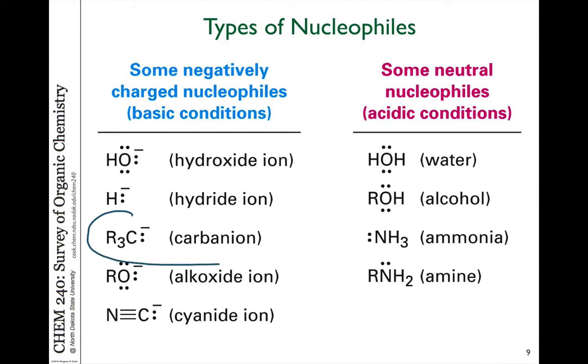We talked about Grignard reagents as an example of a strong nucleophile that is a negative charge. These react very readily with aldehydes and ketones to make alcohols, and they're very convenient. Let's take a look at using some neutral nucleophiles which are much less reactive, such as water or alcohols. We'll discuss amines in another video.